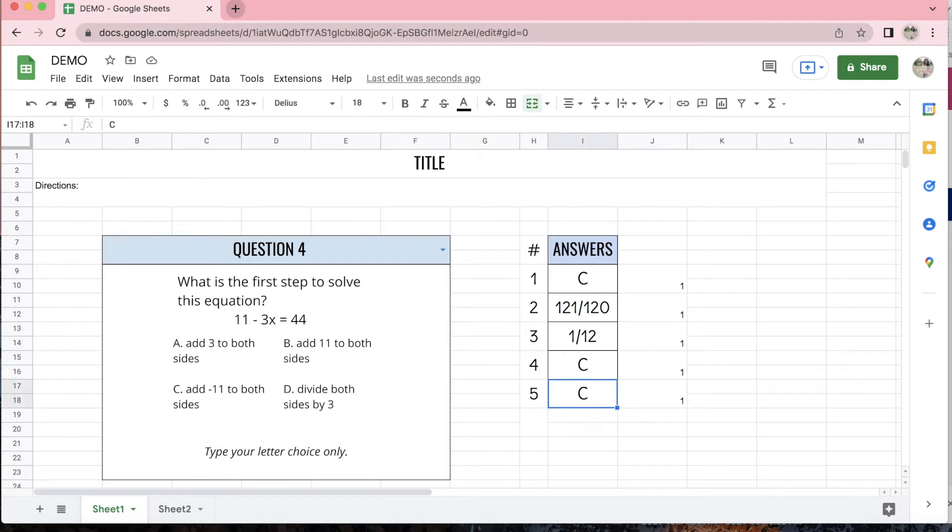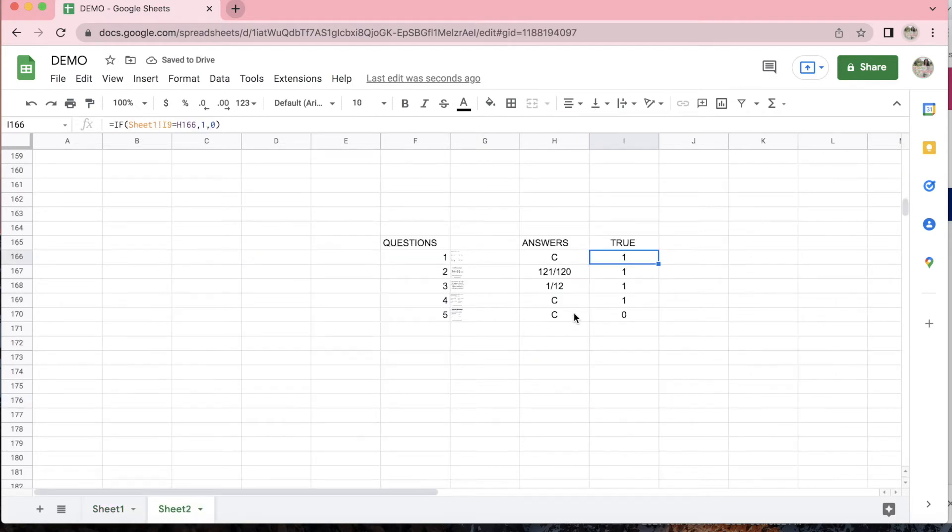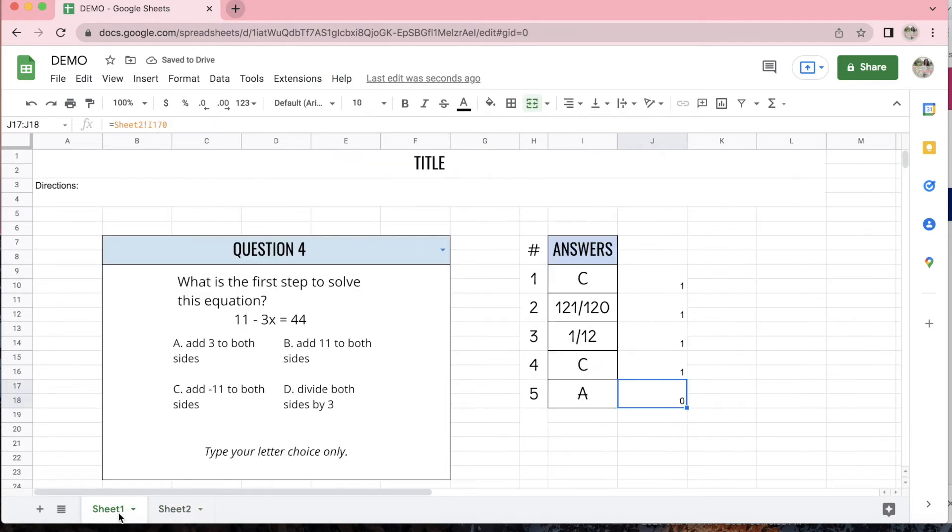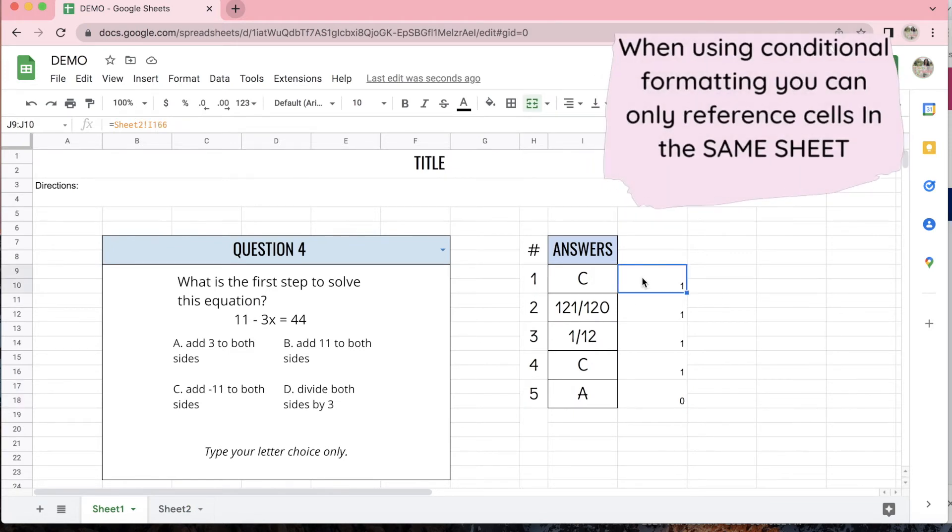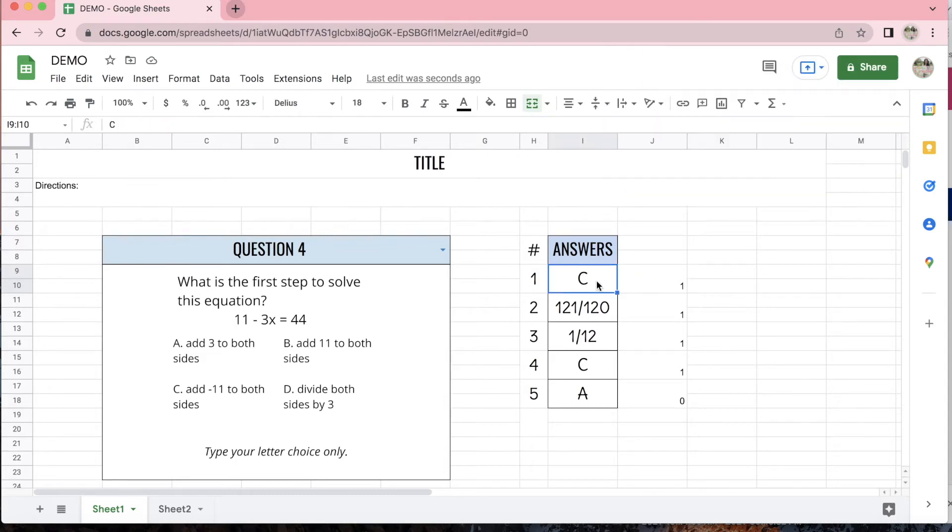So notice that if I now put anything else here, if I put A, it gave me a 0. Where is the 0 coming from? It's coming from here. Okay, so now let's get into the conditional formatting. The conditional formatting is what formats each of the cells, what makes them turn green or what makes them turn red, or whatever colors you choose. So let's get into that.